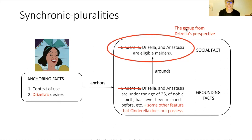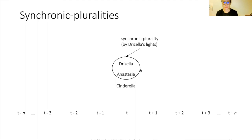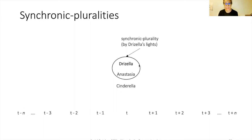Here is how Drisella differs. The anchoring facts — the context of use — remain the same, but the desires that now matter are Drisella's. These anchor the grounding conditions: Drisella and Anastasia are under 25, of noble birth, never married, and possess some additional feature that Cinderella does not. These grounding facts yield the social fact that only Drisella and Anastasia are eligible maidens. The group from Drisella's perspective therefore just includes Drisella and Anastasia.